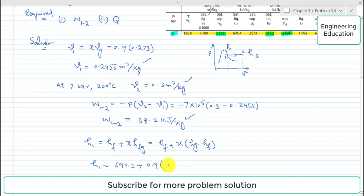So putting the values: the value of hf from the table is 697.2 plus the value of x is 0.9, and hg value is 2764, hf value is again 697.2. So simplifying this, the value of h1 comes out to 2557.3 kilojoules per kilogram.